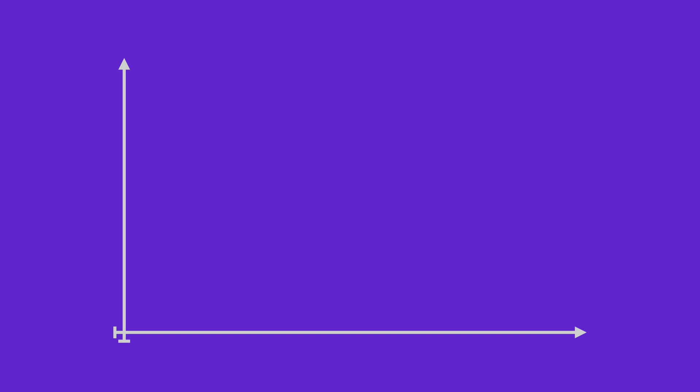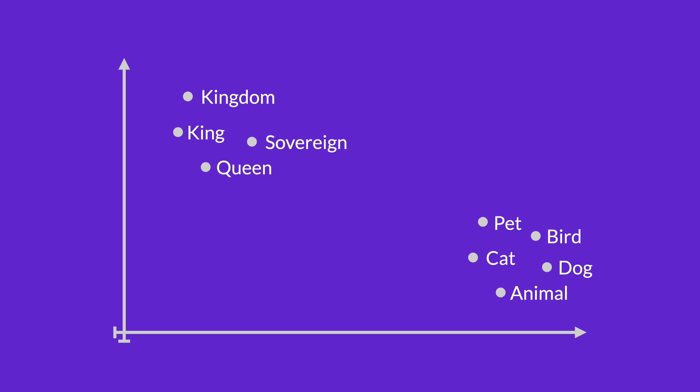Here is what we would want the embedding space to look like if we trained a successful word embedding. Since we cannot visualize 32-dimensional space, let's use a representative 2D space. In this embedding space, we want similar words to be closer to each other — for example, 'king', 'queen', 'sovereign', 'kingdom', or another group could be 'cat', 'dog', 'pet', 'bird', 'animal'.